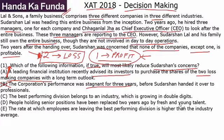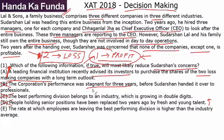Option C: The best performing division belongs to an industry which is growing in double digits. Again, Sudarshan is not worried about the best performing division — he is worried about the two loss-making divisions, so this doesn't help. Option D: People holding senior positions have been replaced two years ago by fresh and young talent. This may explain poor performance, but fresh and young talent should ideally lead to more growth, so this does not really reduce Sudarshan's worries.